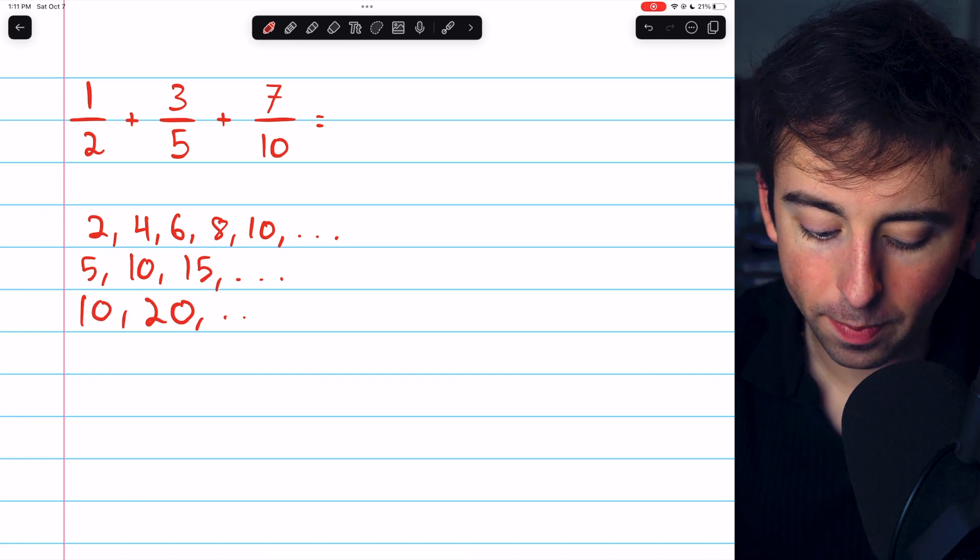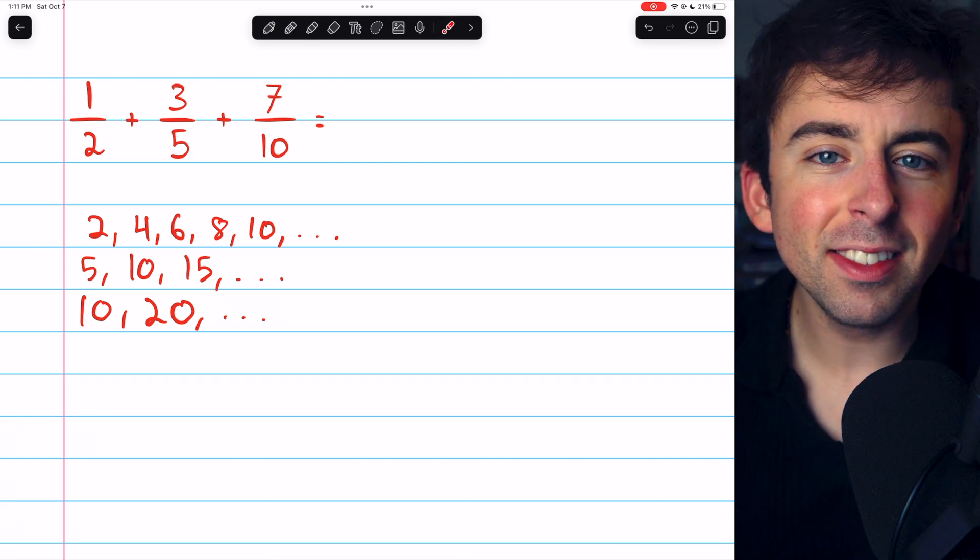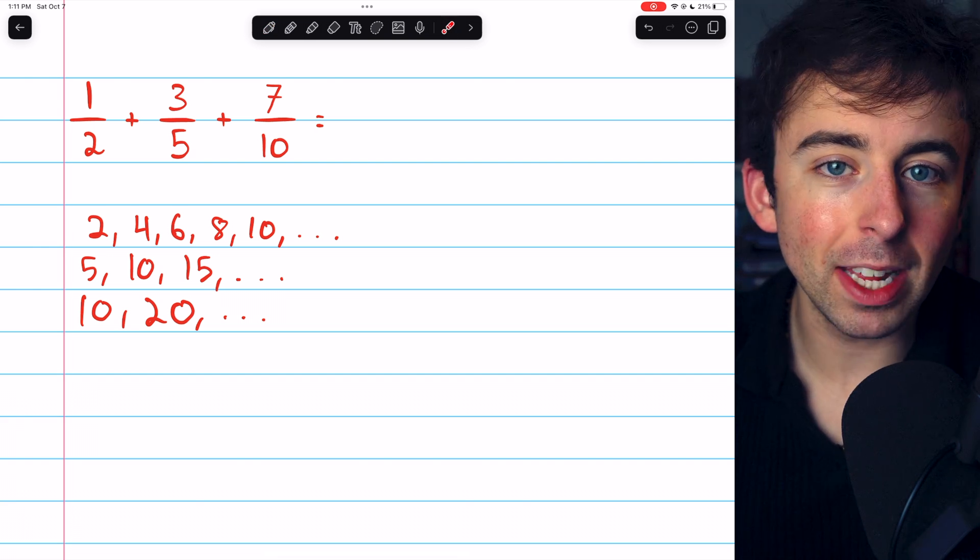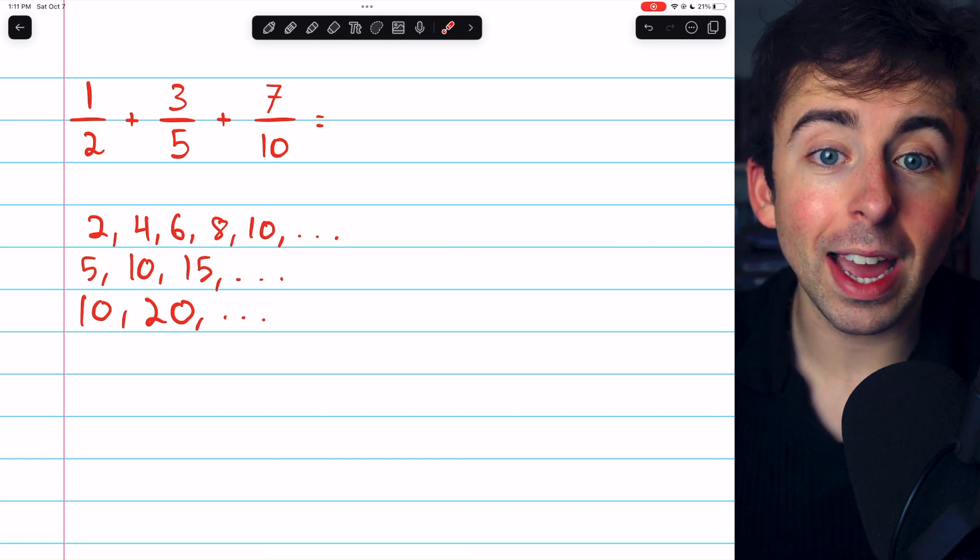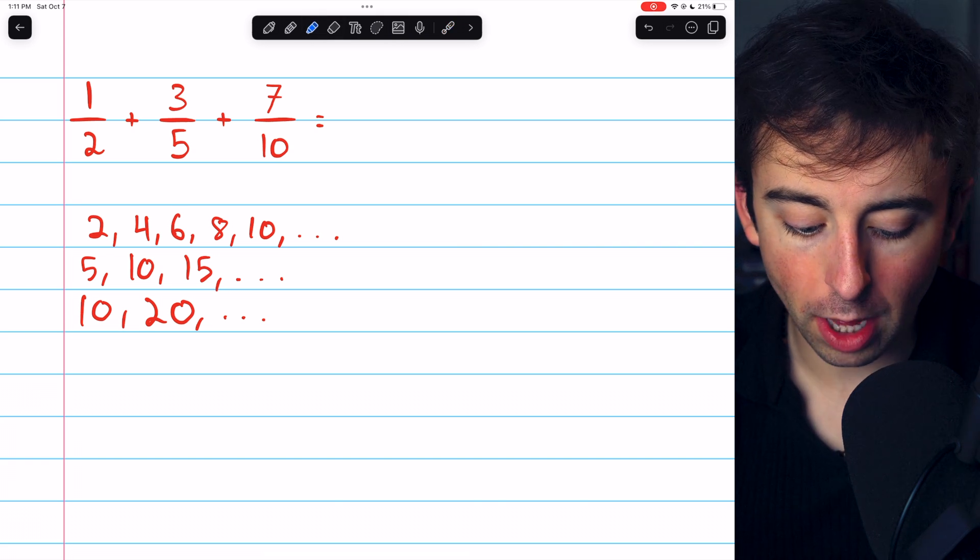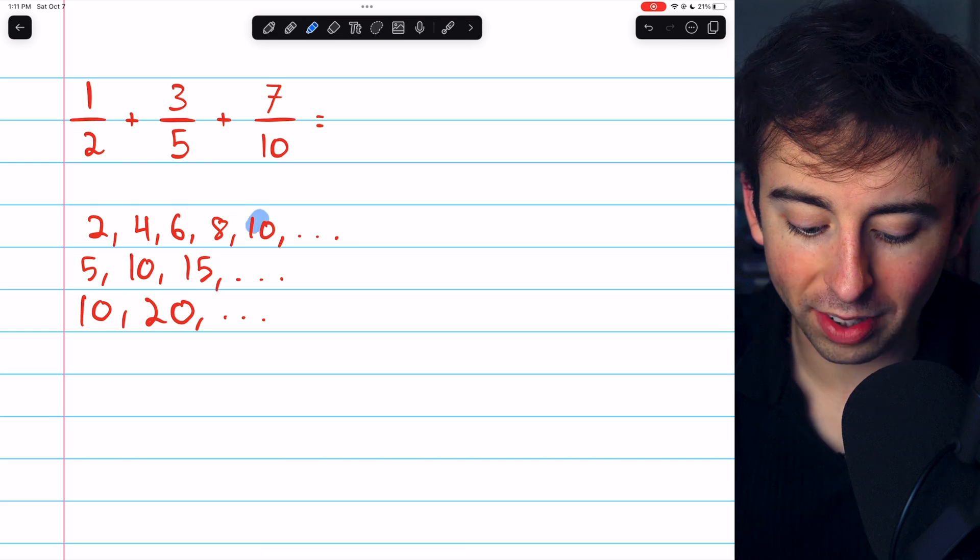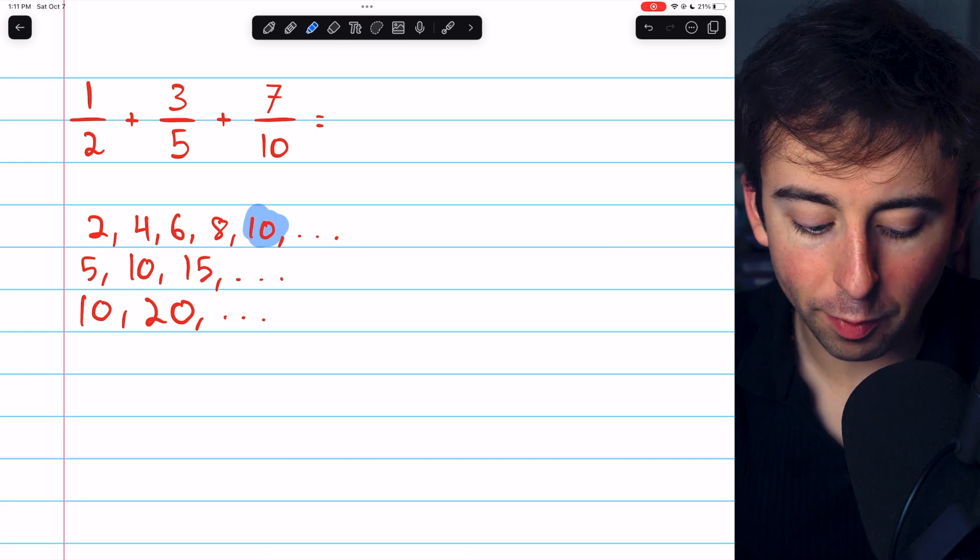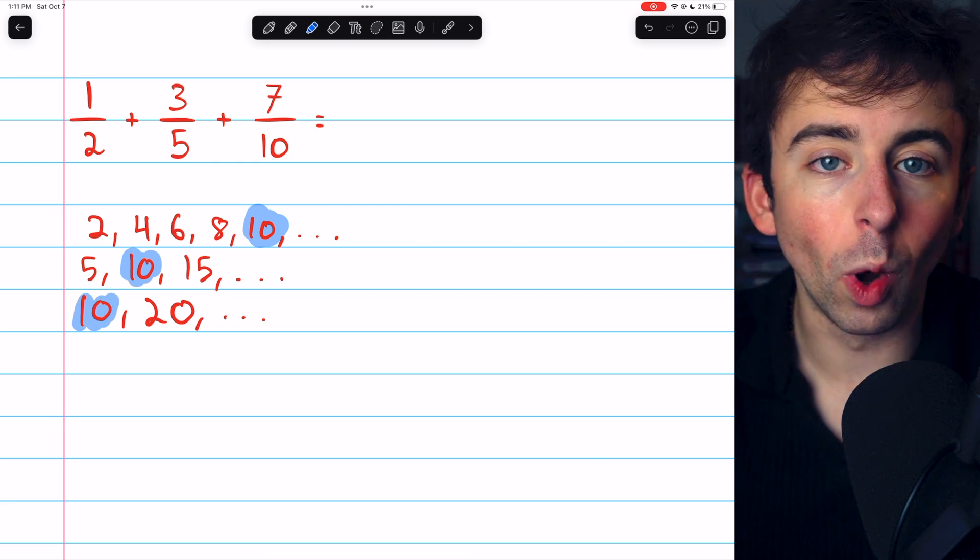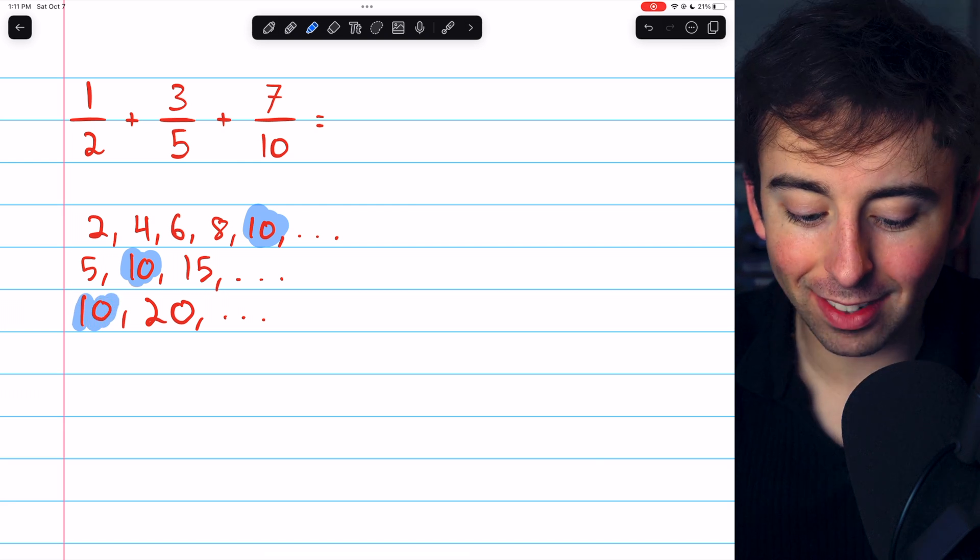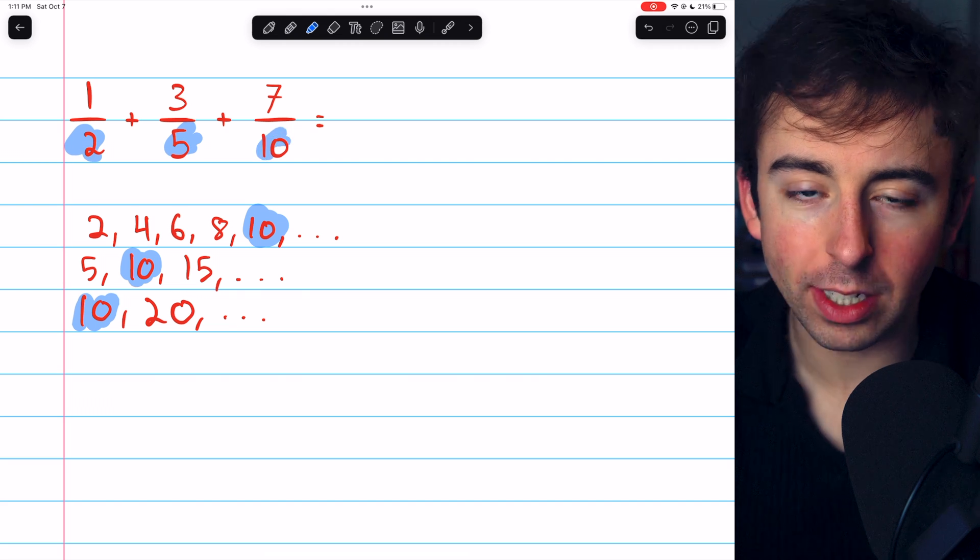The problem with this method is you never know exactly how many multiples you're going to have to list. At this point, we see that we actually do have a common multiple among our list. 2 goes into 10 five times, 5 goes into 10 twice, and 10 goes into 10 once. 10 is the least common multiple of these three denominators.